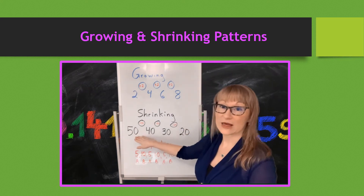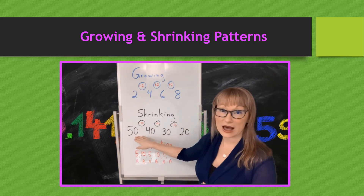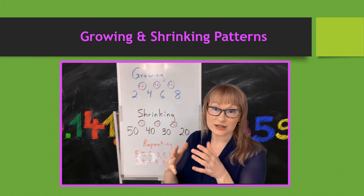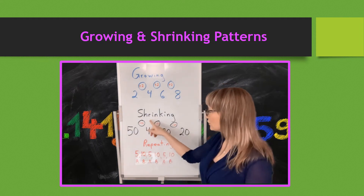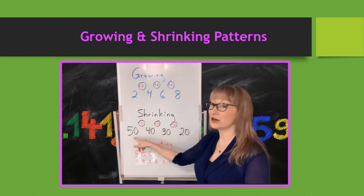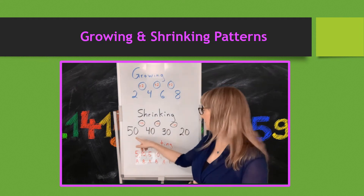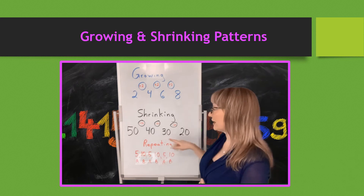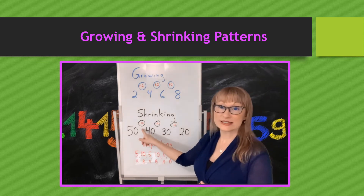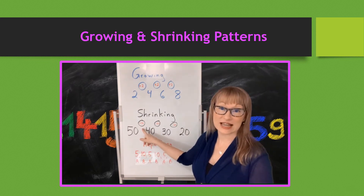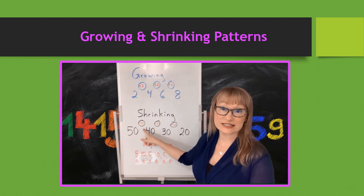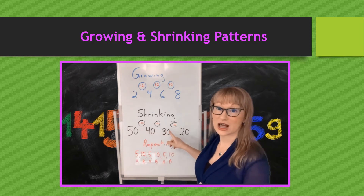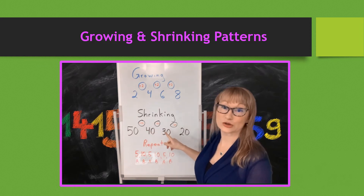For the next one, a shrinking pattern is something that is getting smaller. So for this shrinking pattern, we have 50, 40, 30, 20. The gap is minus 10, because it's getting 10 smaller each time we move to a new number.